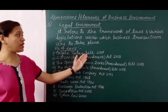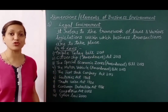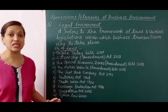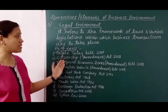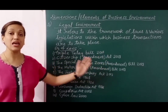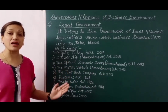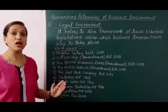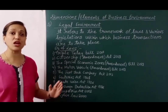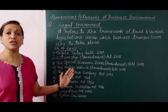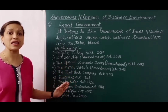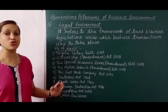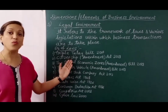For example, the Triple Talaq Bill was passed in 2017, according to which giving instant divorce can result in imprisonment of up to 3 years for a Muslim. The second is the Citizenship Amendment Act 2019, according to which Hindus, Sikhs, Parsis, Christians, and Buddhists who came from Pakistan, Afghanistan, and Bangladesh before 2014 can apply for Indian citizenship. However, Muslims are not included in this. Many political parties and organizations opposed this bill.